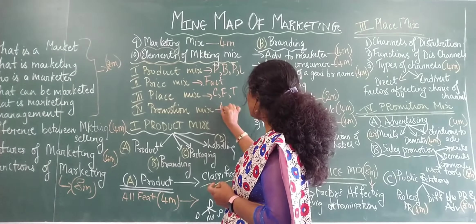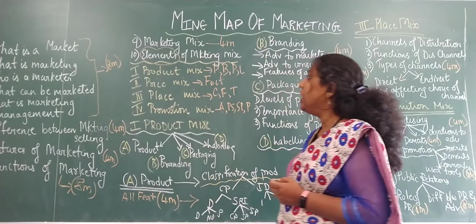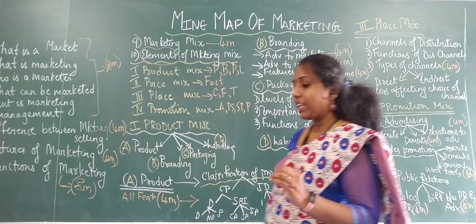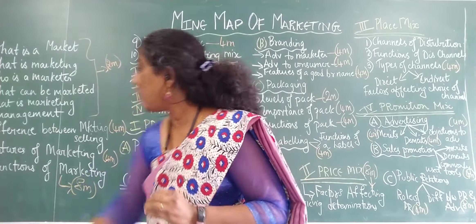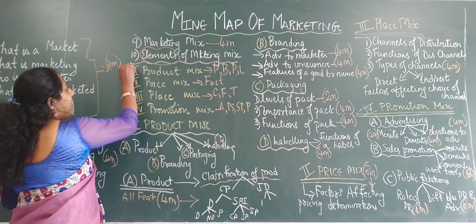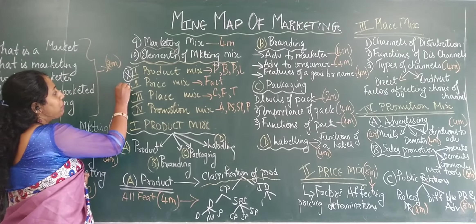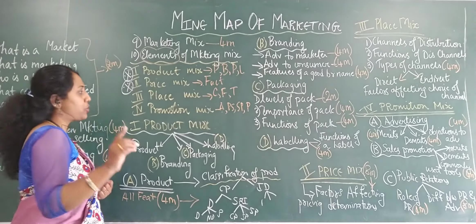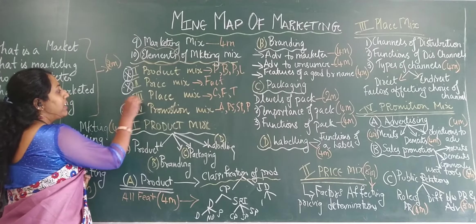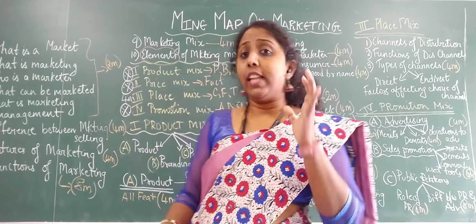When you talk about promotion, you have advertising, personal selling, sales promotion, and publicity. In terms of scoring: product mix is very very important — please learn the entire product mix. Please learn the entire price mix; there is only one solid eight-marker. You should also learn the entire promotion mix, where there's a four-marker or two-marker that will come. It's very important to understand what comes under the marketing mix.